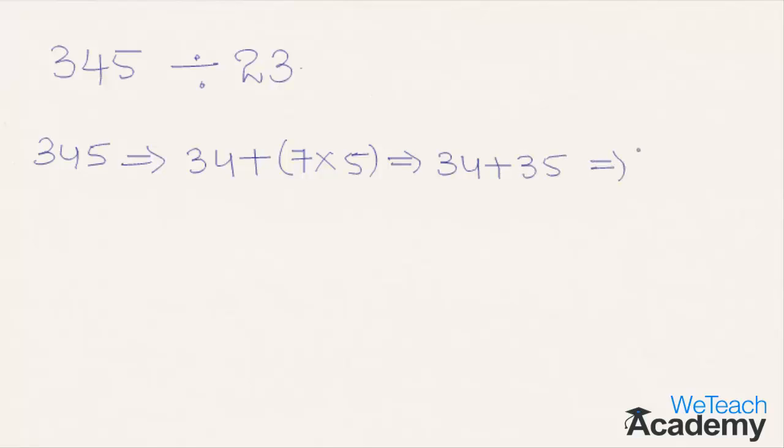That implies we get 69 here, and 69 is divisible by 23, that is 23 into 3. Now let us check by dividing this number with 23.